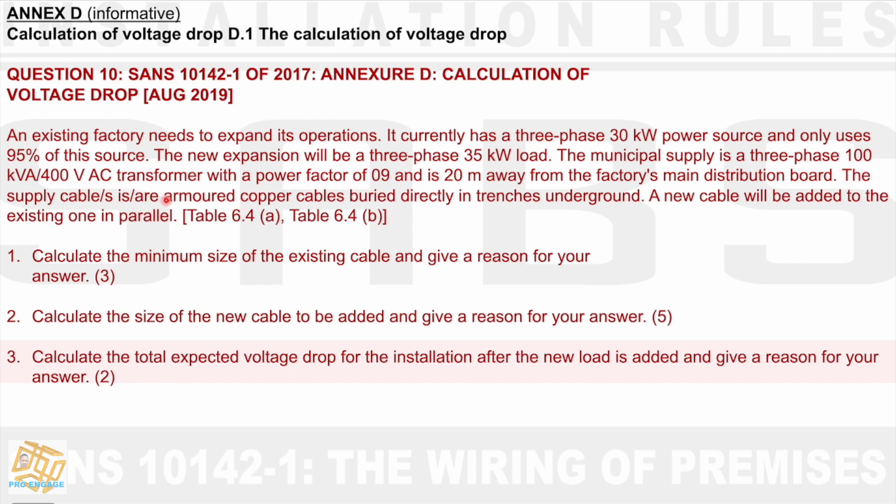And is 20 meters away from the factory's main distribution board. The supply cable is armoured copper cables buried directly in trenches underground method 3. A new cable will be added to the existing one in parallel. Table 6.4A and table 6.4B is attached in the question paper. So I can only imagine that this would be used for our calculations. 10.1 would be calculate the minimum size of the existing cable and give a reason for your answer. Also 10.2 would be calculate the size of the new cable to be added and give a reason for your answer for 5 marks. And then 10.3 would be calculate the total expected voltage drop for the installation after the new load is added and give a reason for your answer for 2 marks.